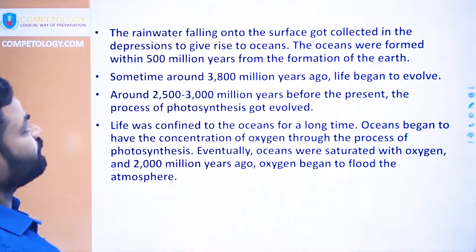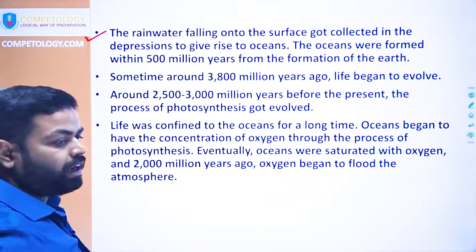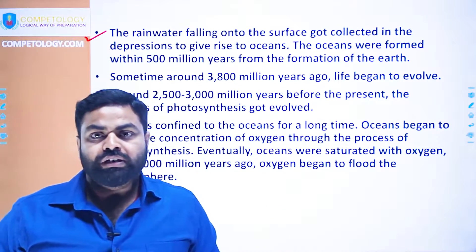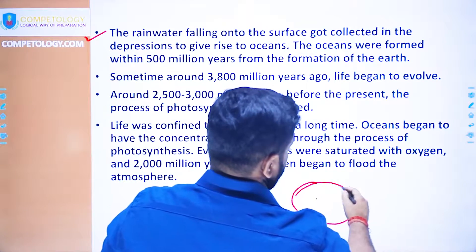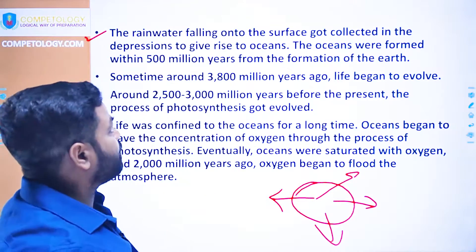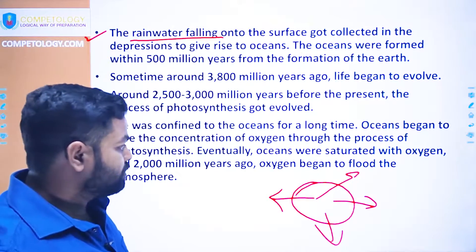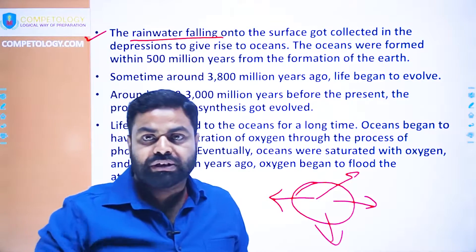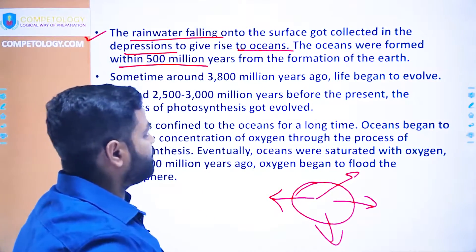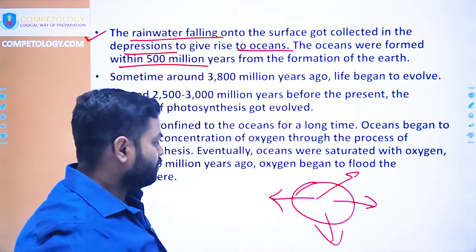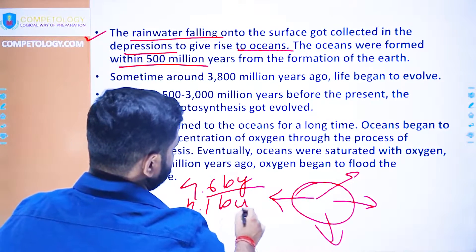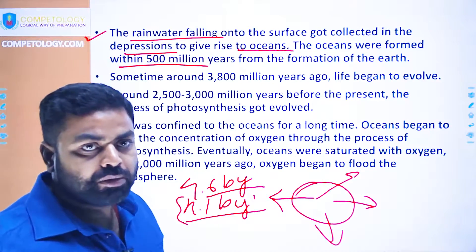Due to various chemical and biological processes, the earth's atmosphere changed further. As the earth continued to cool, the water vapor released from the earth's interior got condensed, forming clouds, and thereafter fell as rain water. This rain water collected in surface depressions, and those depressions formed the oceans. This happened within about 500 million years after the formation of the earth, making the oceans approximately 4.1 billion years old.